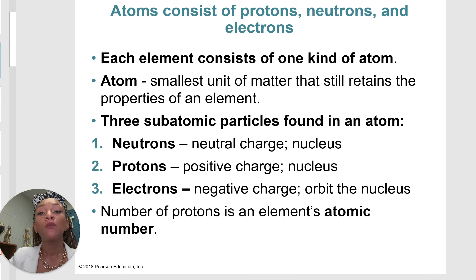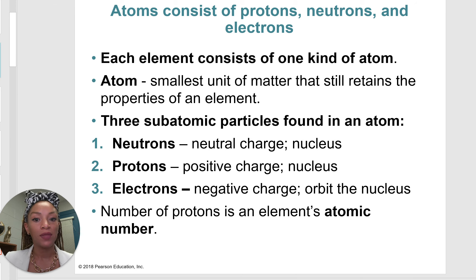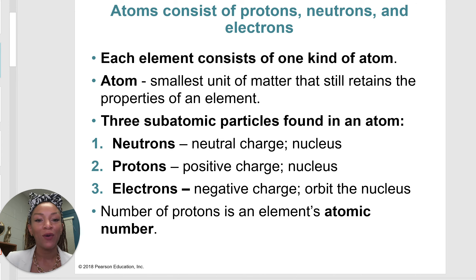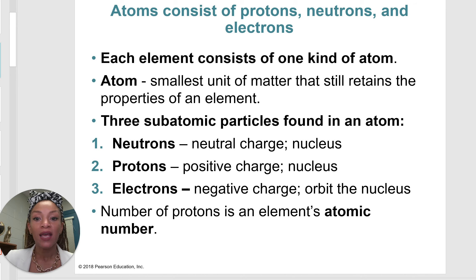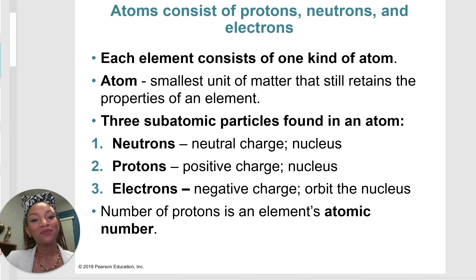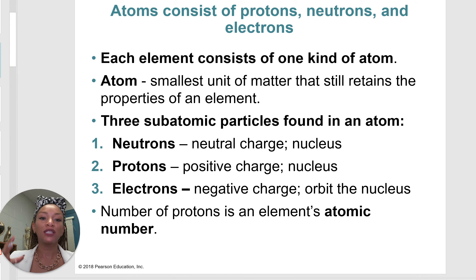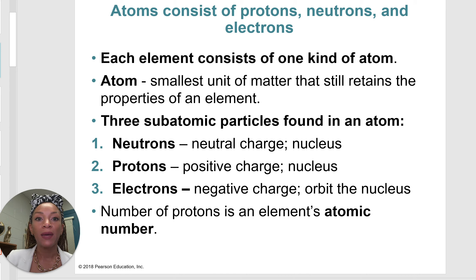Next, we have protons. Protons are positive — just like being 'pro' something means you support it. Protons are also found within the nucleus. The last subatomic particle is the electron. Electrons have a negative charge and are not found within the nucleus. Rather, they circulate in a cloud surrounding the nucleus. The number of protons is an element's atomic number.